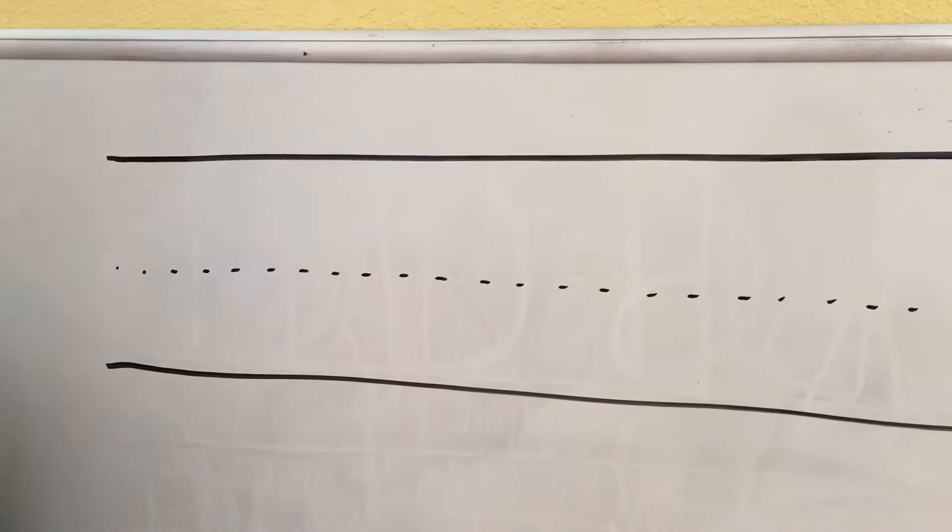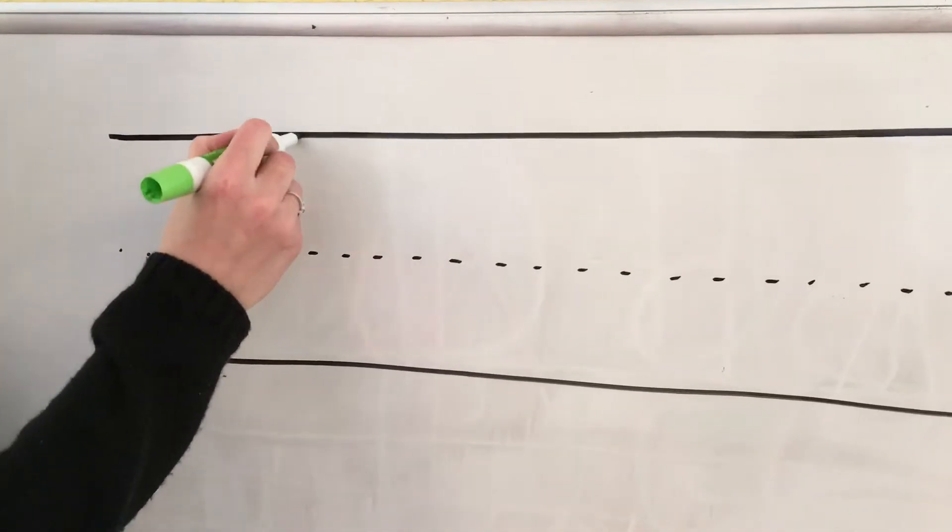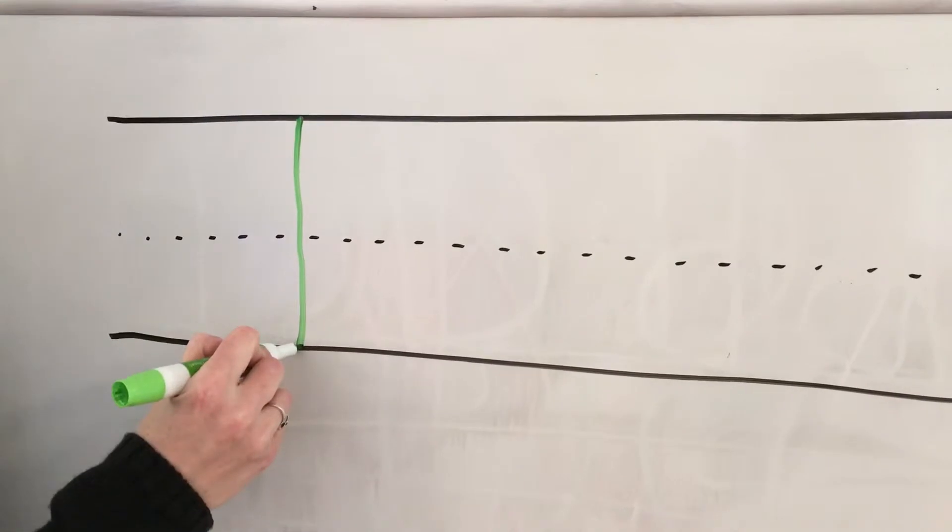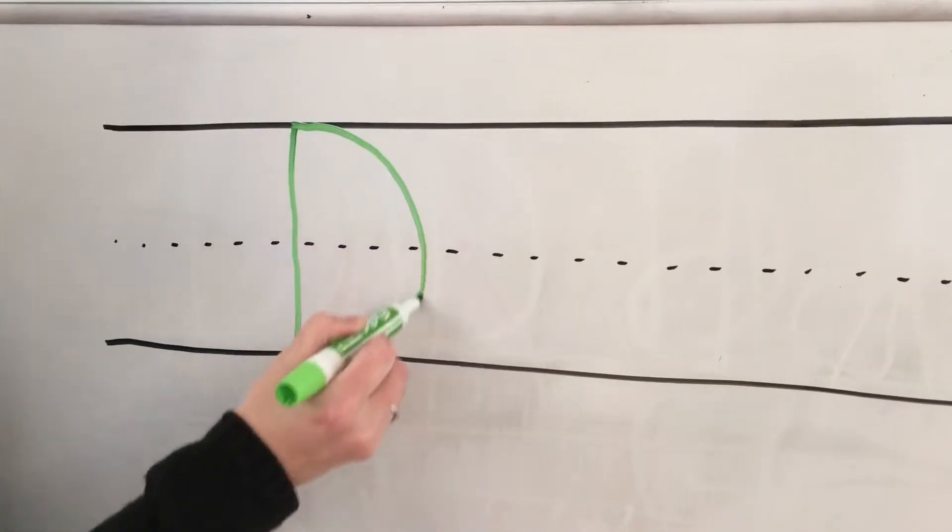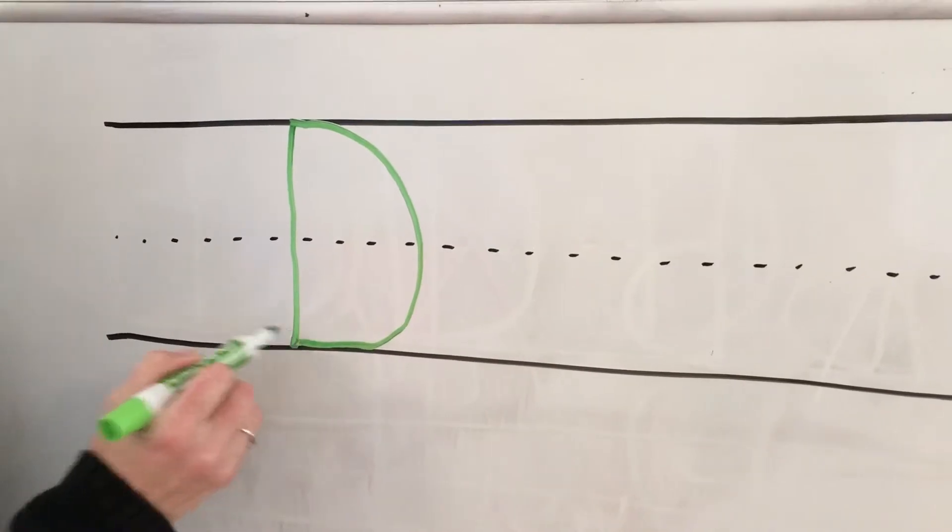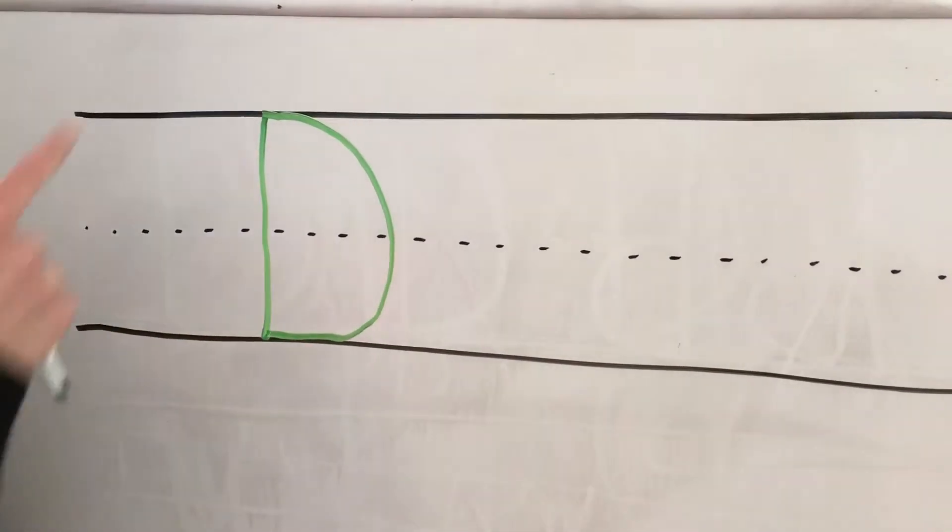Here are the tricks to write capital and lowercase d. For capital D, you start at the top, make the big line drop, you frog jump back to the start, and then you make a big curve bubble shape all the way down to the ground. The most important thing with capital D is that your lines are connected to the straight line.